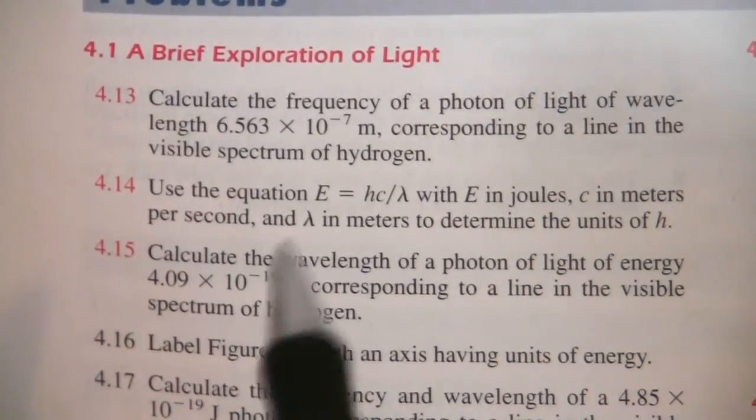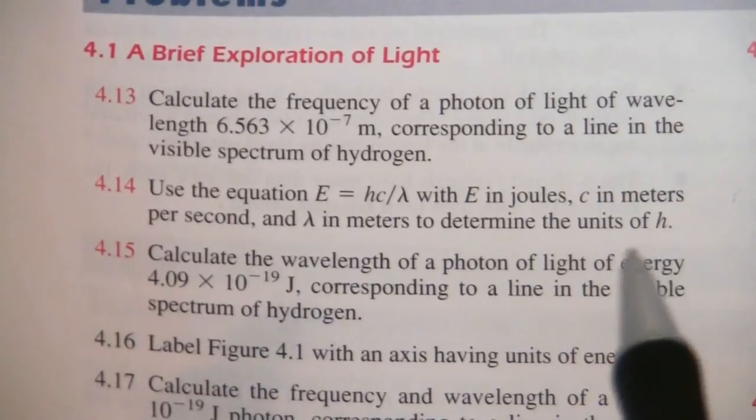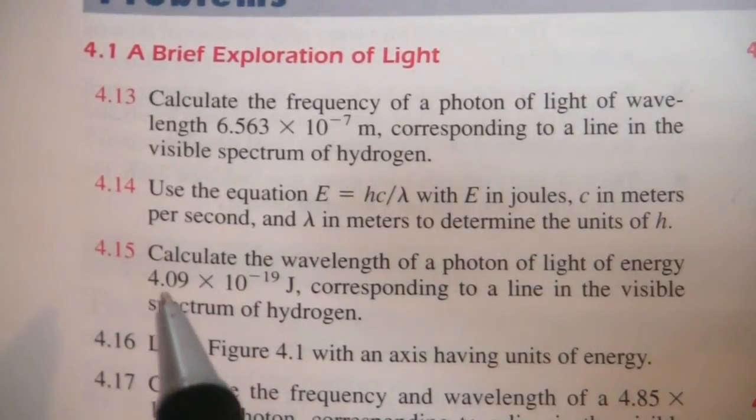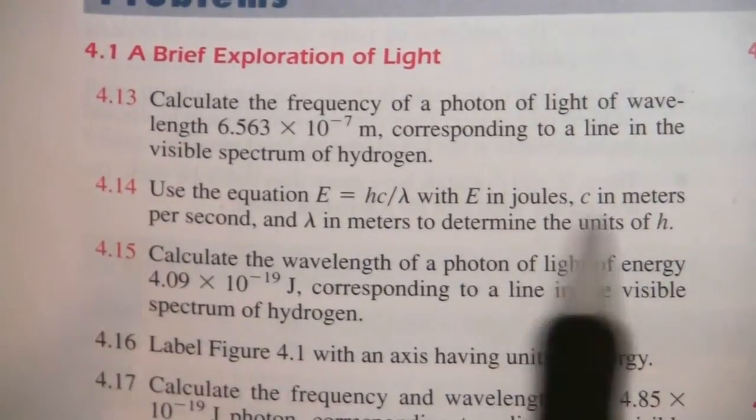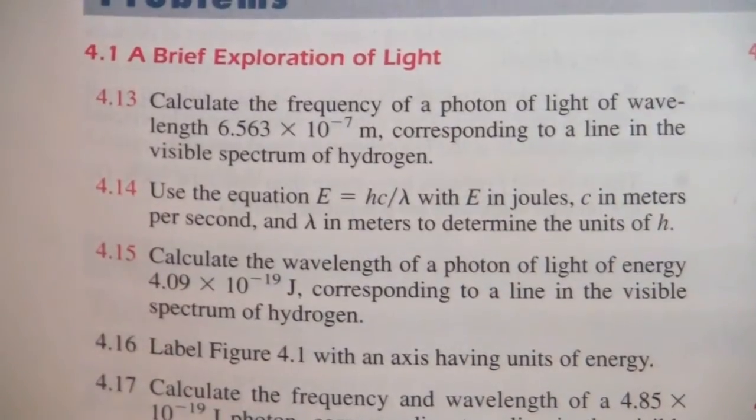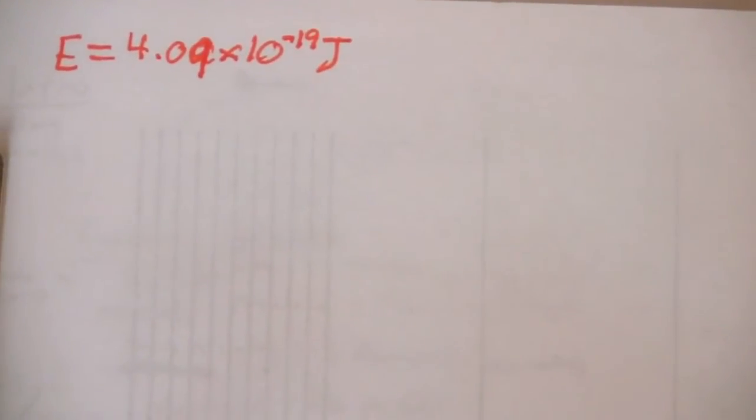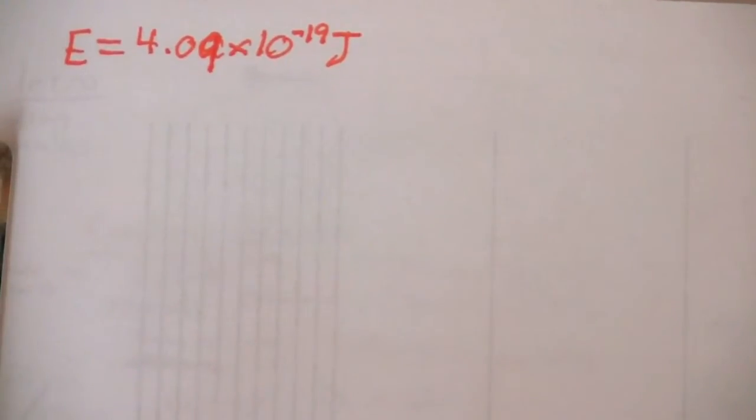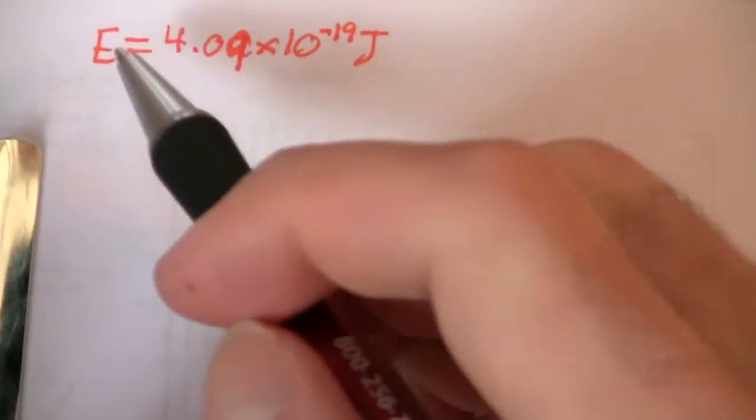So we want to calculate the wavelength of a photon of light that has an energy of 4.09 times 10 to the minus 19th joules. We're given energy, we want to find the wavelength. So here's what we're given. Now in order to find the wavelength, we need to have a relation between energy and wavelength.